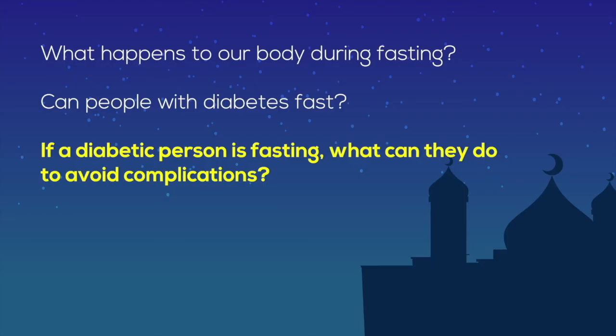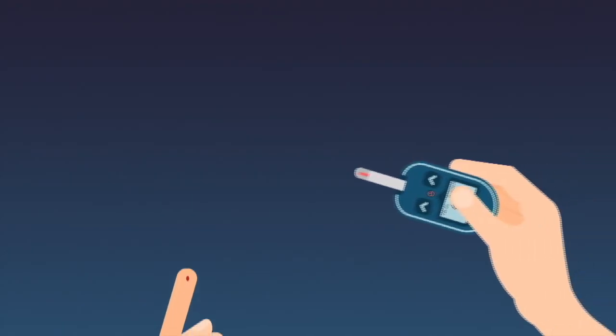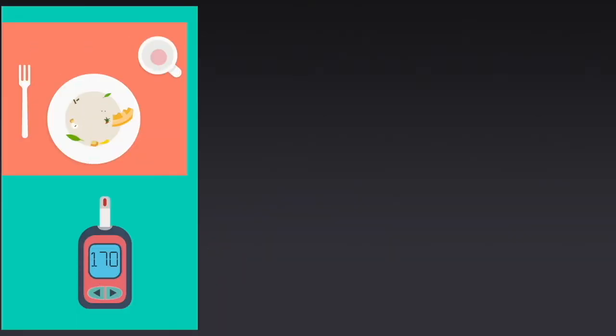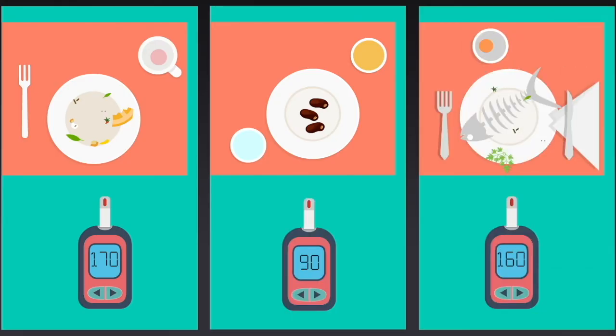If a diabetic person is fasting, what can they do to avoid complications? If your doctor allows you to fast, you should monitor your blood sugars closely, especially in the first few days of fasting. Check your sugars multiple times a day. Some important timings are 2 hours after morning meal, before breaking your fast, and 2 hours after the night meal.